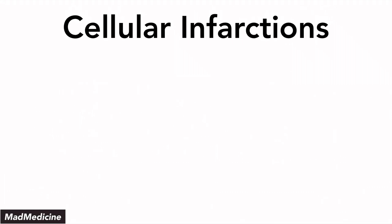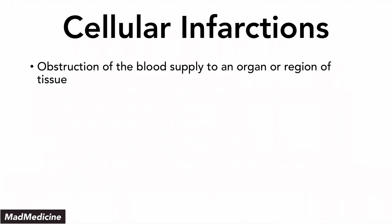When it comes to infarctions, it's very important to understand that infarctions are a type of stress placed upon a cell. And depending on the type and extent of the infarction, the injury they can have on an organ can vary. Essentially, cellular infarctions occur when you have an obstruction of the blood supply that goes to an organ or a region. Remember, when you're blocking the blood supply to an organ, you're not just blocking the blood going to the organ, but you're also blocking the blood coming from the organ — so we're talking about both arterial and venous supply.